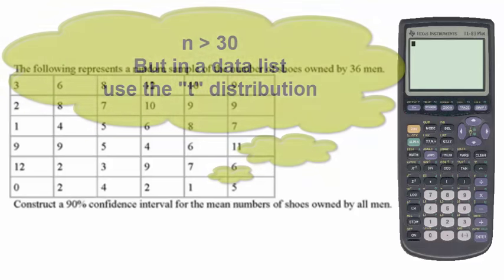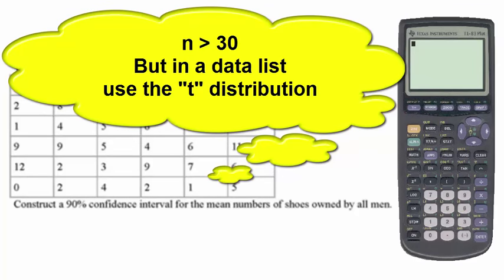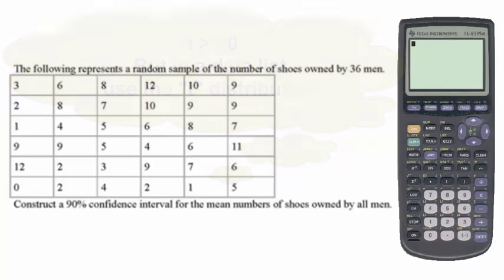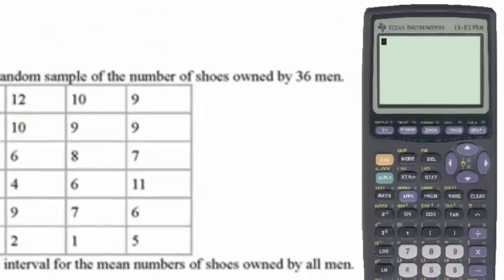However, when the data are given in a list, and if that list is more than 30, we will instead use the t distribution. Since we want a 90% confidence interval, we will look at the t interval.